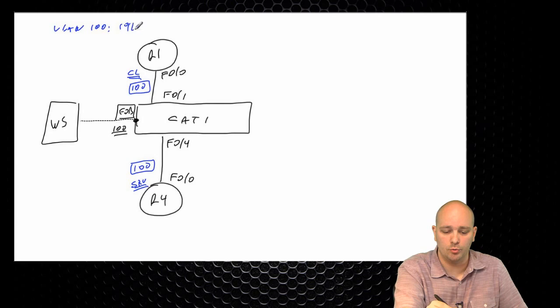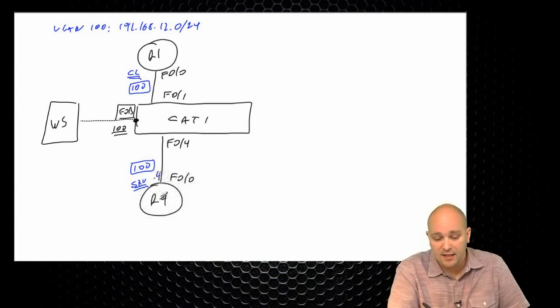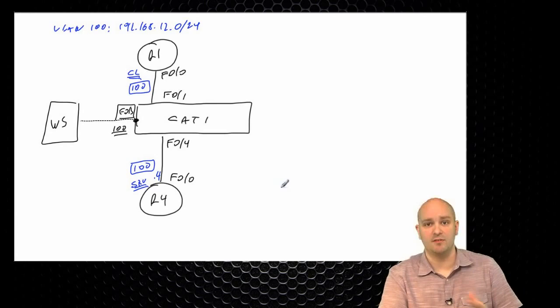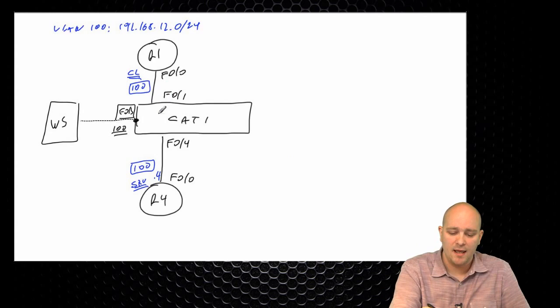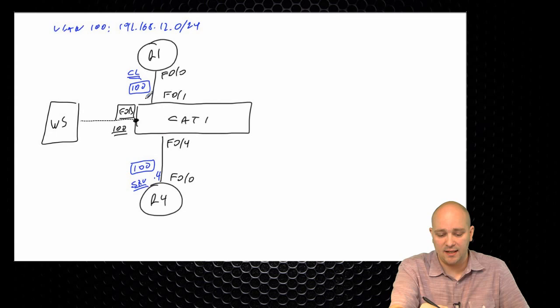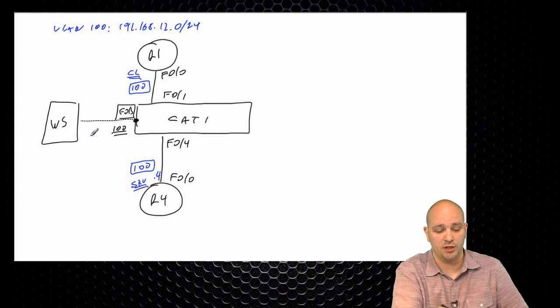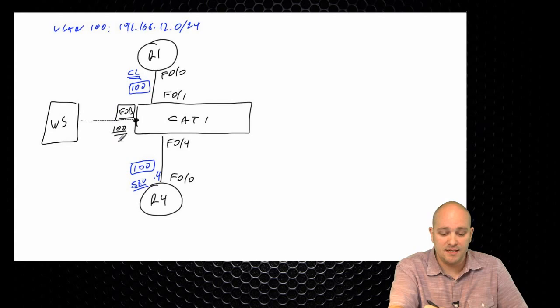I'll use the 192.168.14.0/24 network, with the .4 address on r4. Whatever IP address gets assigned to r1 from r4 we'll see during the demo. I won't go into complex DHCP server configuration — just a basic setup to respond to requests. On cat1, all ports are up, VLAN 100 is configured, and the ports are configured as access ports in VLAN 100. I haven't configured IP addressing, the DHCP server on r4, or DHCP snooping on cat1 yet. The Wireshark server is configured but its port is not yet in VLAN 100.